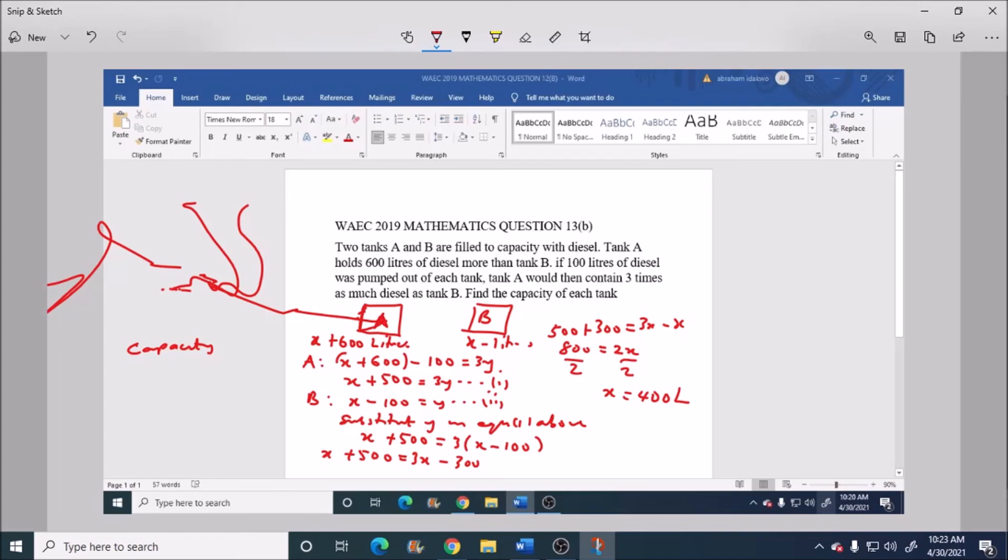Then the capacity of tank B is equal to 400 liters.